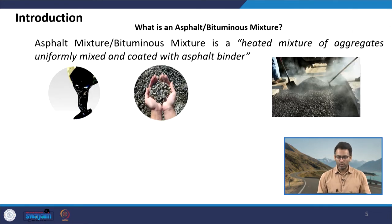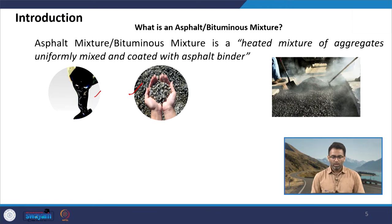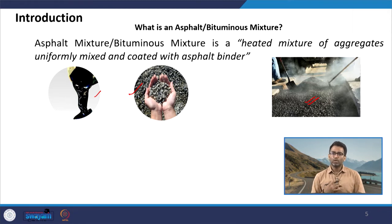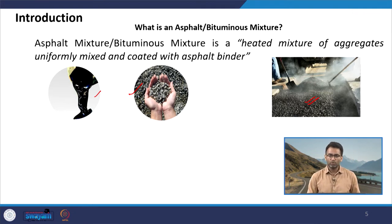We have bitumen and mineral aggregates which are graded because there is a specific gradation we are targeting. Once we mix them it will appear as a loose mixture, which will be further laid, spread on the surface of the pavement, and compacted using specific types of rollers. I will visually show you a bituminous mixture — this mixture is made up of graded mineral aggregates and bitumen. This is a very dense mixture, but we can have mixtures with various gradations, various surface characteristics, and various volumetrics as well.